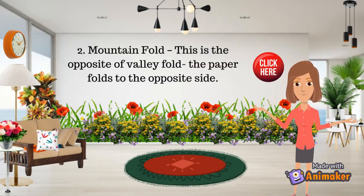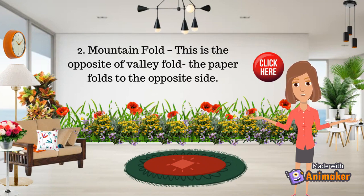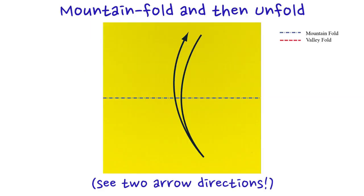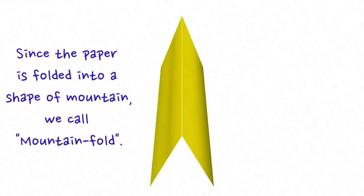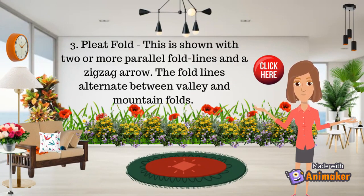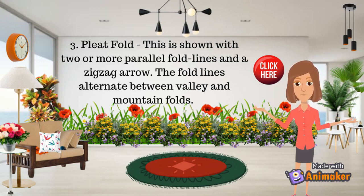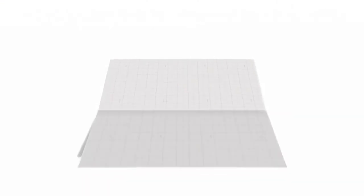Next is the Mountain Fold. This is the opposite of the Valley Fold — the paper folds to the opposite side. Next is the Split Fold. This is shown with two or more parallel fold lines and a zigzag arrow. The fold lines alternate between valley and mountain folds.